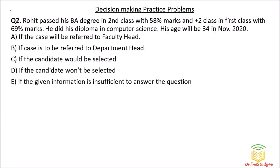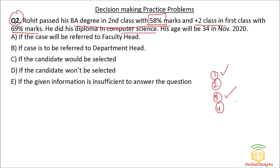Question number two: Rohit passed his BA degree in second class with 58 percent. In graduation, any stream is fine but he should score more than 55 percent — so Condition 3 is satisfied. He has also passed 12th with 60 percent — Condition 1 satisfied. He did his diploma in computer science — Condition 4 satisfied.